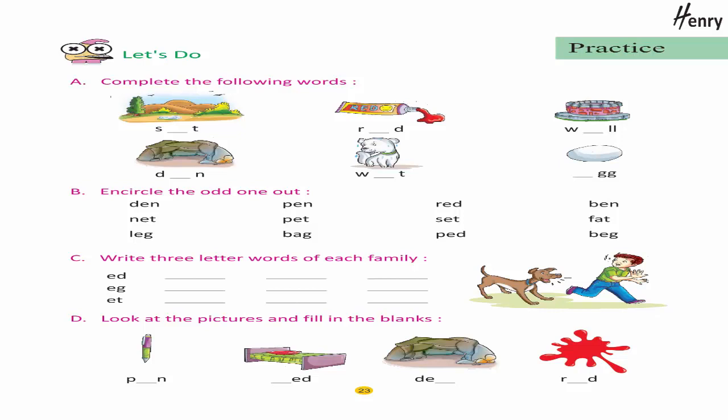Practice: let's do. Complete the following words. Encircle the odd one out. Write three-letter words of each family. Look at the pictures and fill in the blanks.